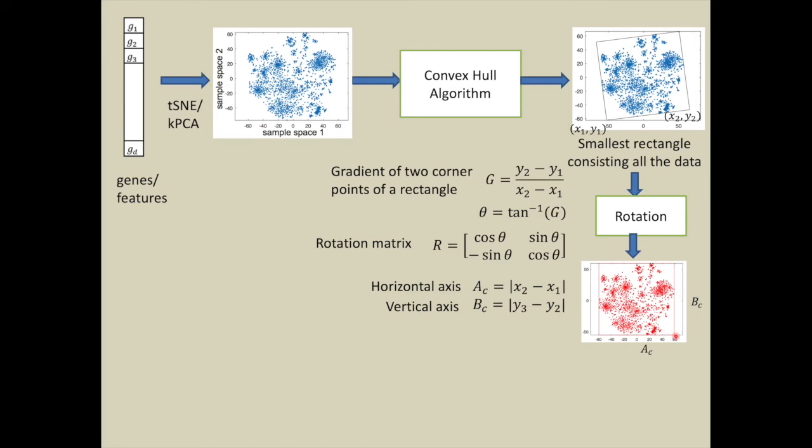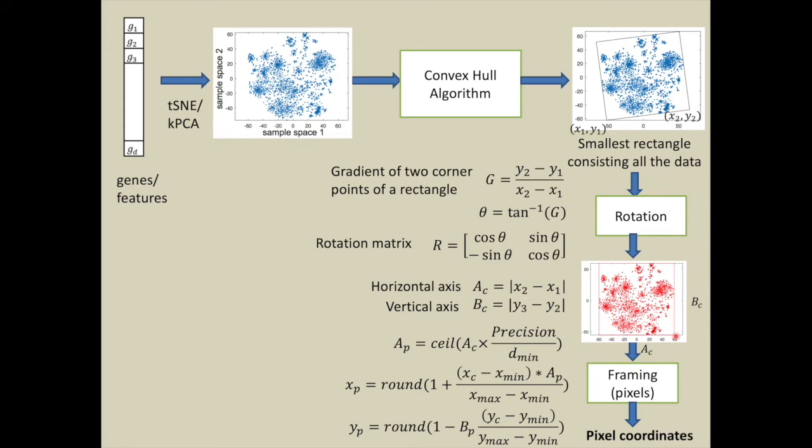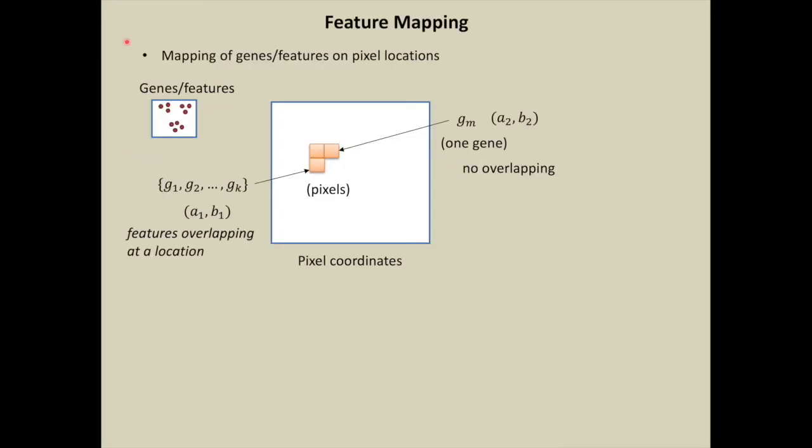Please note that these red dots in the Cartesian coordinate system represent the gene or feature locations only, not the gene expression values. Thereafter, Cartesian coordinates are transformed to pixel coordinates, and gene values are mapped onto these locations.